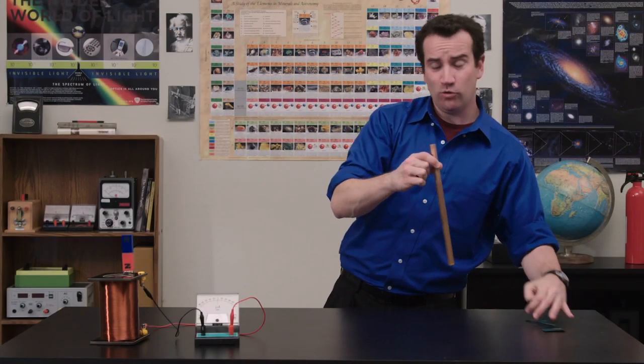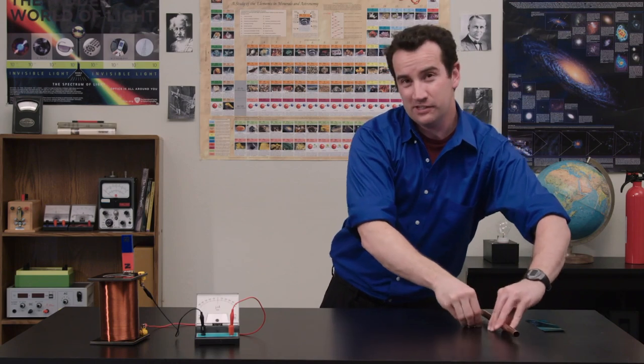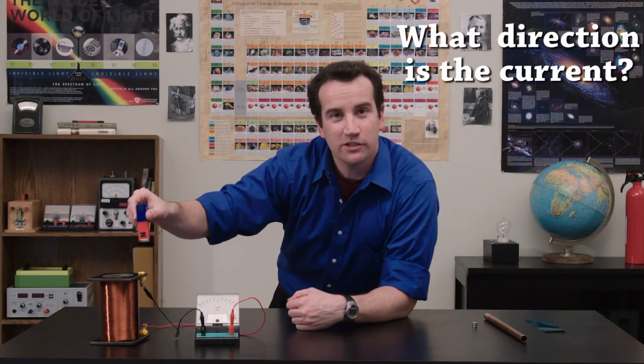Let's imagine that it's the north end of the magnet that's going in first. Or, in this case, that it's the north end of this magnet that's going into the solenoid coil. What direction is the current going to flow?